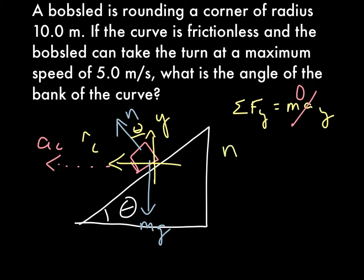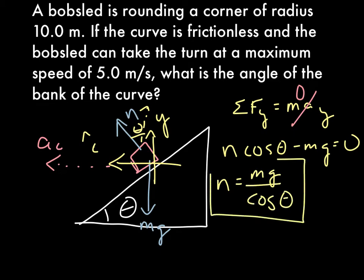you'll get in, this is the side adjacent to that angle, so you'll get n cosine theta minus mg equals 0. Or you'll get n equals mg over cosine theta. This is going to be our result from here.